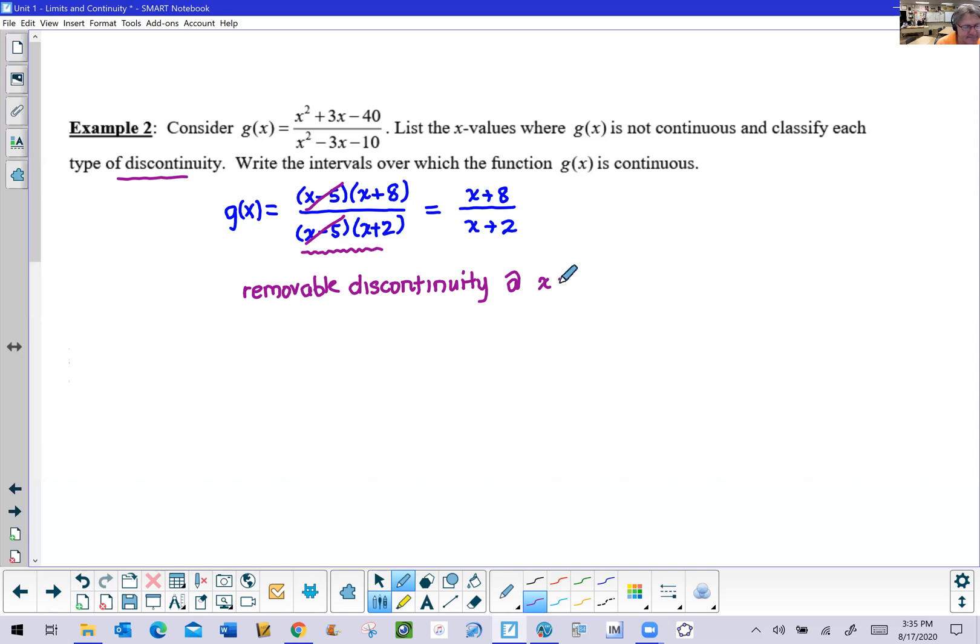Now, if by some chance you have a denominator factor that does not cancel, then it is not going to be removed. So we could say then that we have a non-removable. Sometimes non-removable is hyphenated. I don't worry so much. Yes, we can do some abbreviation.